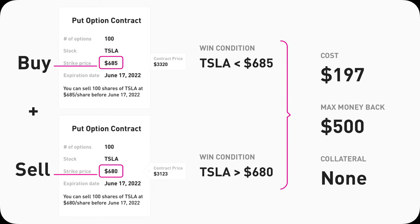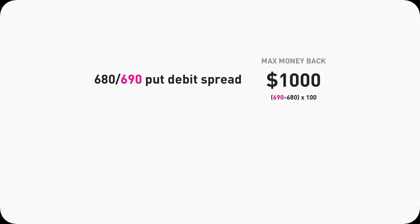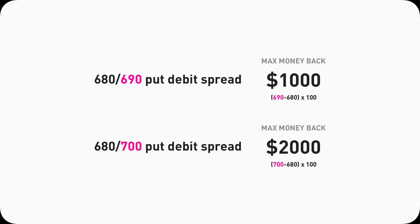The net effect is that your max profit is limited, but you don't need to spend a crazy amount of money to make it happen. It only costs $197 and you can get $500 back, profiting $303 in two weeks. The max money you can get back for a 680-690 Put Debit Spread is $1000, and for a 680-700 Put it's $2000. It's always the difference between the two strike prices times $100.